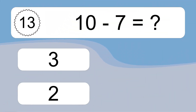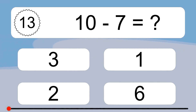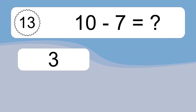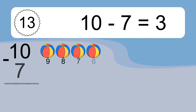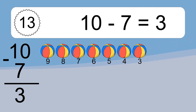10 minus 7 equals what? 10 minus 7 equals 3. Let's count it: 9, 8, 7, 6, 5, 4, 3.